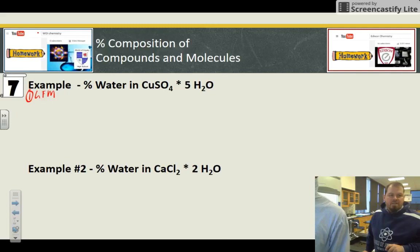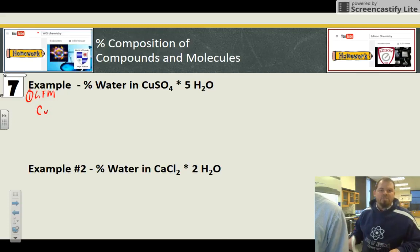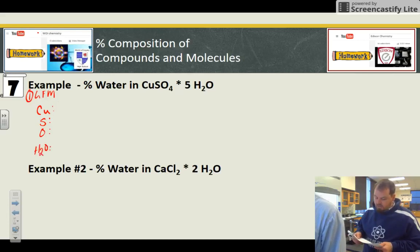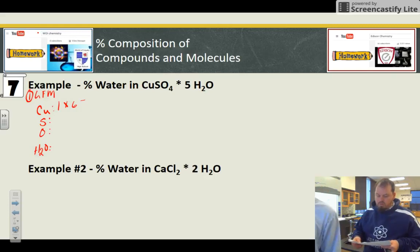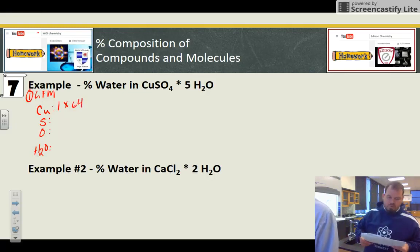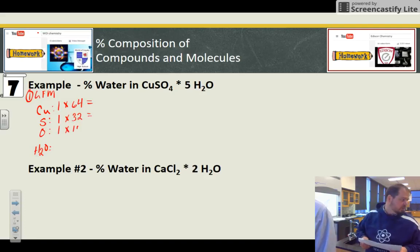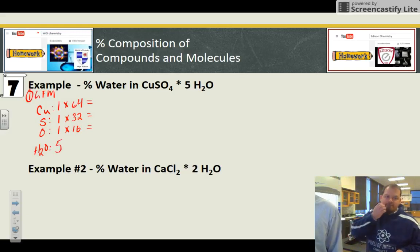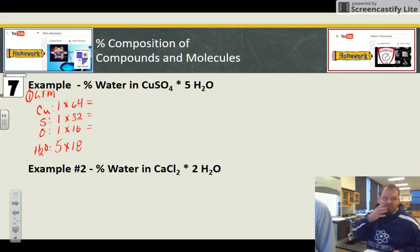So here we go. So we have to calculate the gram formula mass of copper sulfate with five waters. So copper, there's one of them. And copper be weighing 64. Remember sulfur though? 32. We all know oxygen at this point. And then here's another important one. Water. Water always comes out to 18. So five times 18. And there are five of them.